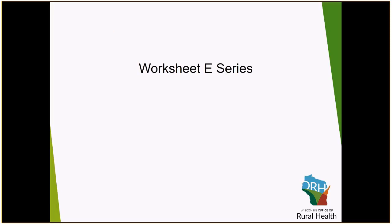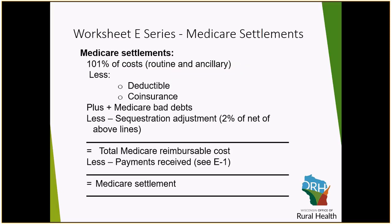The Worksheet E series is where you will ultimately determine the Medicare settlement for your inpatient, outpatient, swing bed program, and skilled nursing facility services. Taking the cost-to-charge ratios from Worksheet C and multiplying by the Medicare charges reflected in your D series will ultimately compute to 101% of the cost to the Medicare program for your routine and ancillary services. It will then subtract coinsurance and deductibles, which come from the PSNR reports as previously mentioned, plus any Medicare bad debts that the organization determines on a bad debt log that needs to be supplied when you file the cost report.